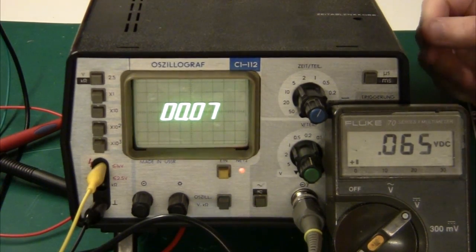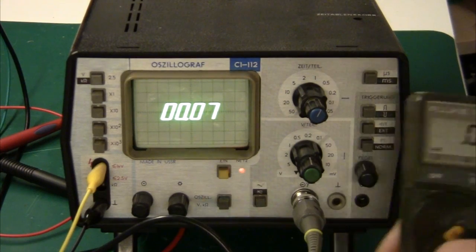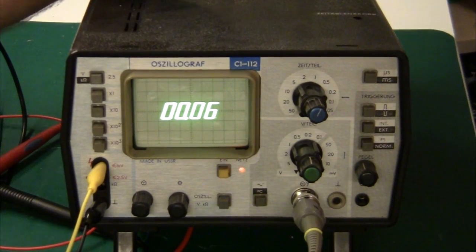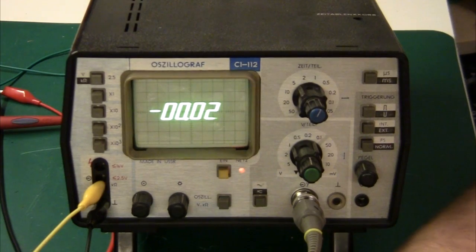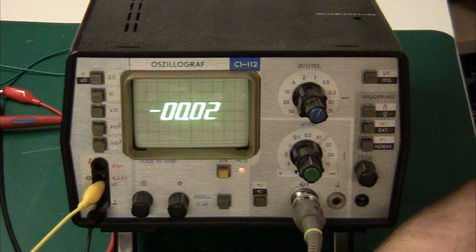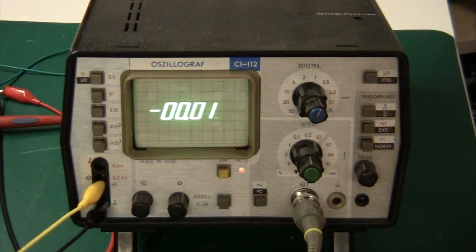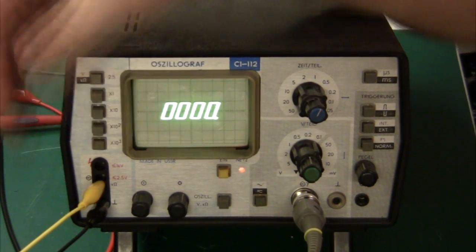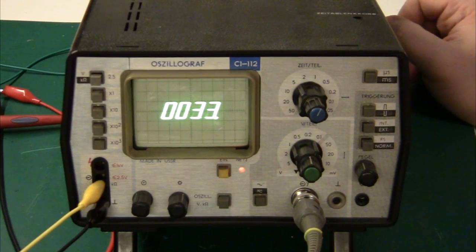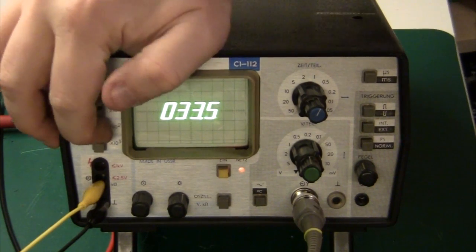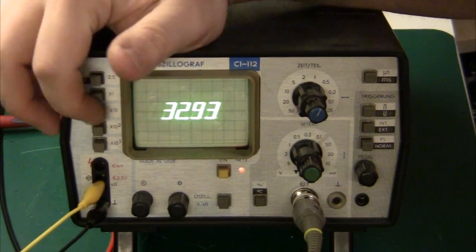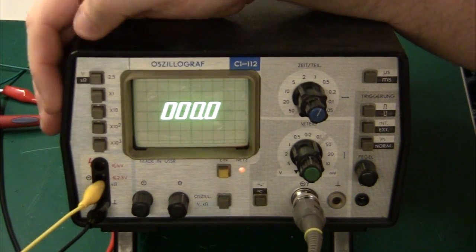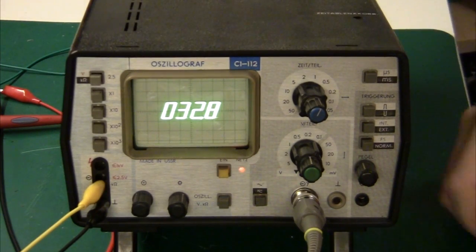It should be able to show ohms as well so let me try that out. I have a resistor here, this is 33k. Let's see what it says here, the display is in kilo ohm. 33 kilo ohm there we go. 32.8, this is giving us a little bit more accuracy.